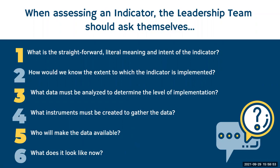When assessing the indicator, the leadership team should consider six important questions: What is the straightforward, literal meaning and intent of the indicator? How do we know to what extent we have this implemented? What data did we use or should we use to analyze this? What instruments do we need to create to gather that data? Who will make the data available? And what does it look like now? Those are six questions that, especially at the beginning, it's nice to have on paper to make sure you've answered all of them. The Wise Ways research has guiding questions embedded — by the end of your team conversation, you should be able to answer each one.